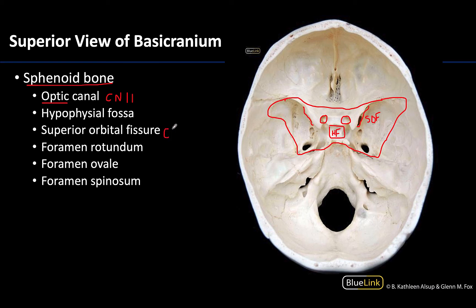The superior orbital fissure transmits cranial nerve III (oculomotor), which serves four of the six extraocular eye muscles, as well as cranial nerve IV and cranial nerve VI — all three serving those extraocular eye muscles. Also, V1, the first division of the trigeminal nerve, the ophthalmic division, will also traverse the superior orbital fissure, which makes sense given it's heading toward that region.